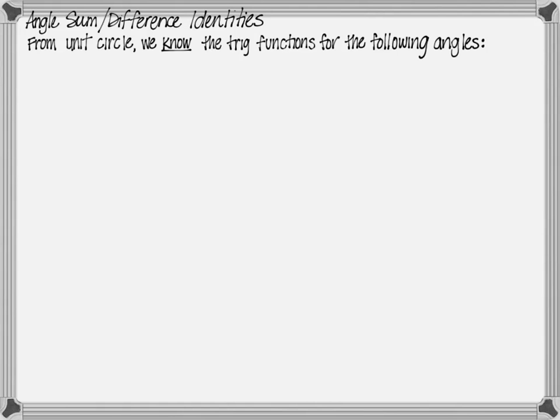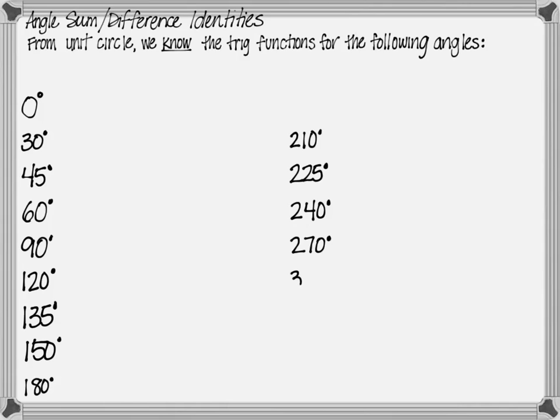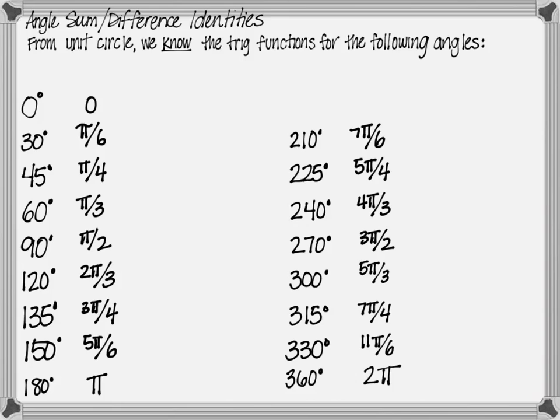Before we actually get to the identities, we need to look at our unit circle and know the trig functions from the following angles. We have all of these angles that were in the unit circle, and we should now know all of the trig functions, all six of them, especially sine, cosine, and tangent for these 17 angles. But not only in degrees, but we should also know them in radians as well. I'm going to make this chart. You can pause it and write it down if you want to, but it's no different than what's in the unit circle.